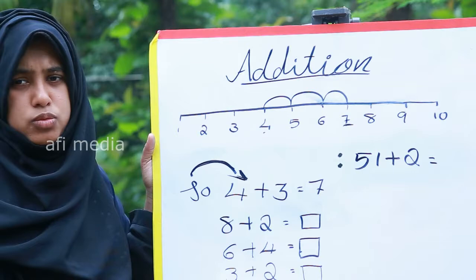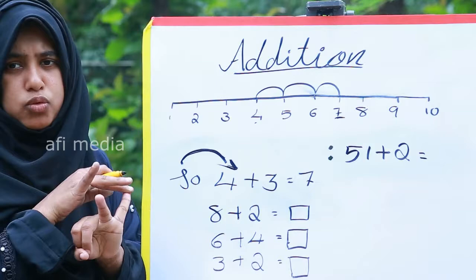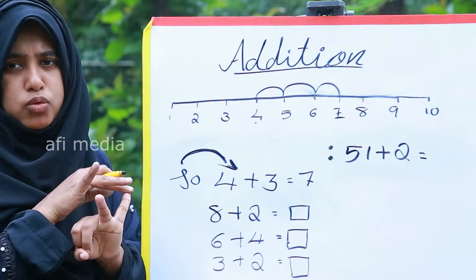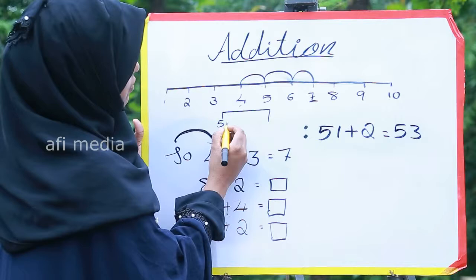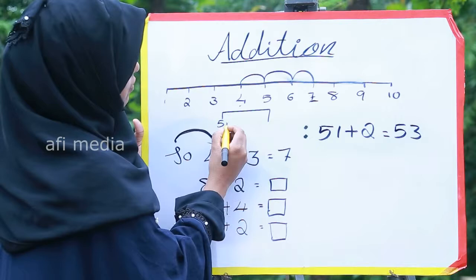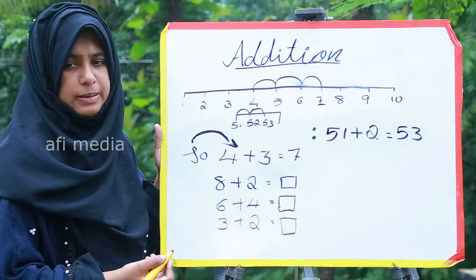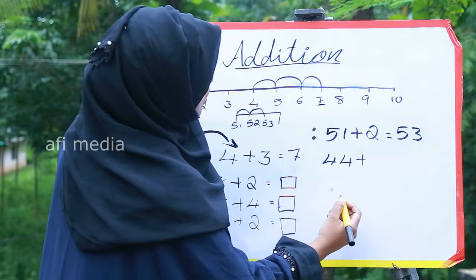How can we find out by counting forward? I am writing two numbers here. For example: 51 plus 2. We can simply count on our hands — 51, then plus 2: 52 and 53. Or you can draw a small number line: start at 51, then mark 52 and 53. The answer is 53.